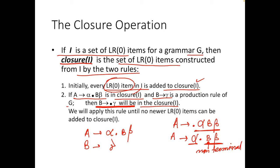After the dot we have B, which is a non-terminal. If we have a non-terminal after the dot, we need to understand what it can produce — what other derivations exist for that non-terminal. So we add the production rule B to dot gamma to the closure, meaning: this B after the dot, when considered for parsing, will produce gamma. We apply this rule until no new LR0 items can be added to the closure.